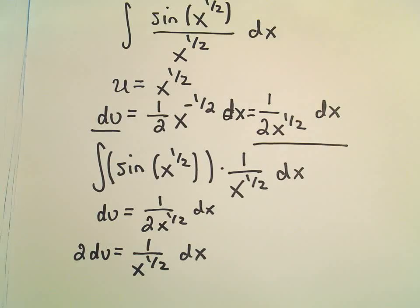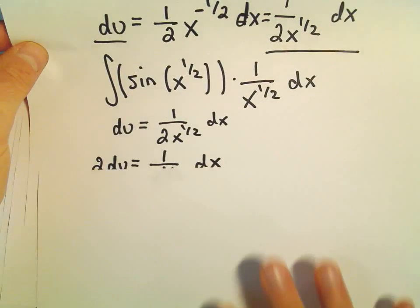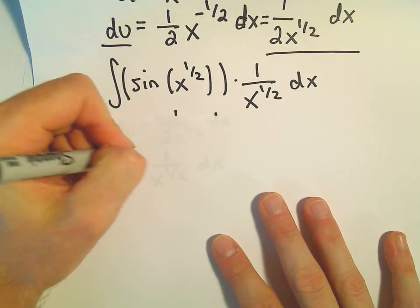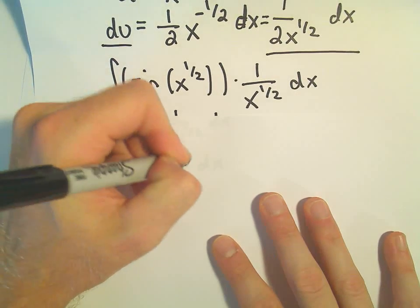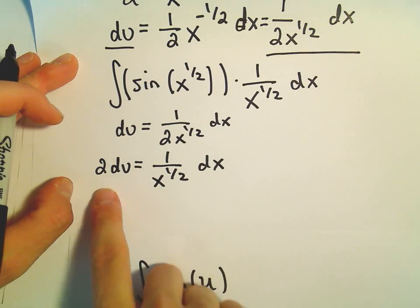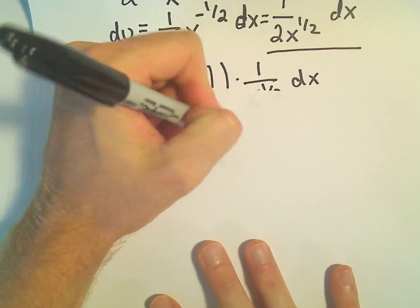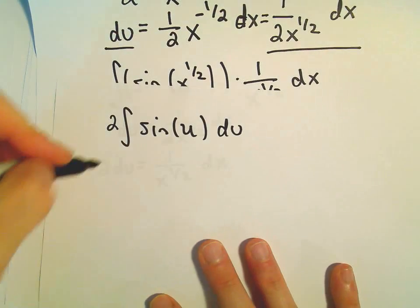So now we're kind of in business. We can use our substitution to integrate this. So we'll have the integral of sine of u. And then our 1 over x to the 1 half dx. That's what we're going to replace with 2 du. So there's our 2. There's our du.